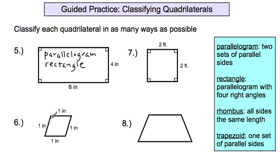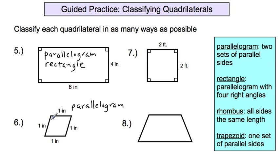Let's move to shape six. Is it a parallelogram? This side looks parallel to the opposite side, and the other pair also looks parallel — so shape six is a parallelogram. Is it a rectangle? Does it have four right angles? This one has zero right angles, so it is not a rectangle. Is it a rhombus? Are all sides the same length? They all say one inch, so they are all the same length — it's a rhombus. And since it's a parallelogram with two sets of parallel sides, it can't be a trapezoid.